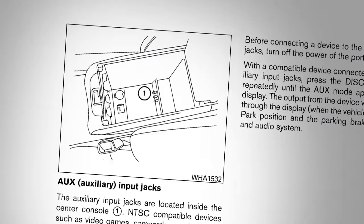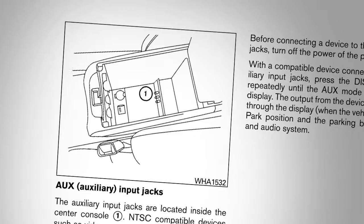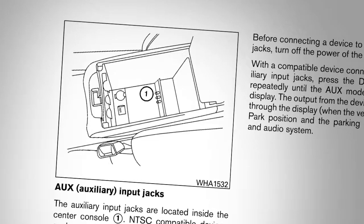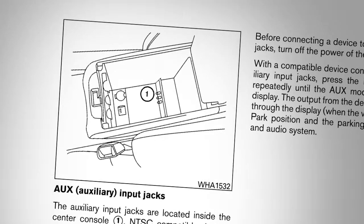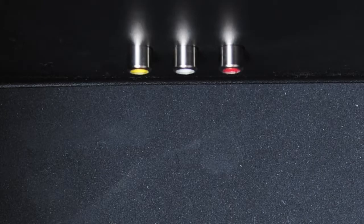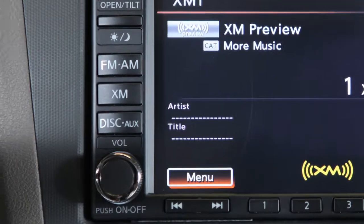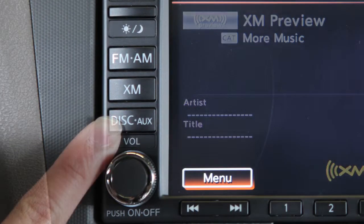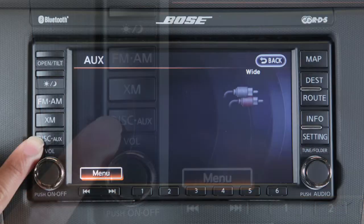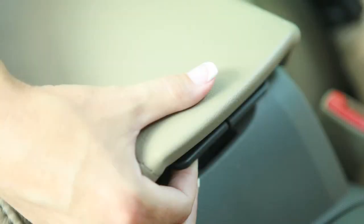Please refer to your vehicle's owner's manual and the manufacturer's owner's manual supplied with your device for detailed information when connecting the device to an auxiliary jack. After plugging a device in, press the disc/auxiliary button to display the auxiliary mode.